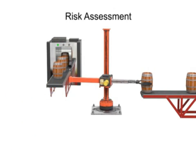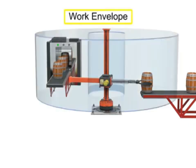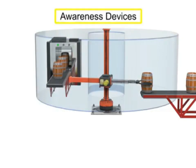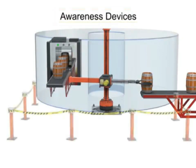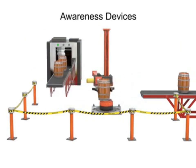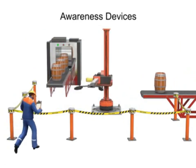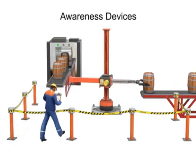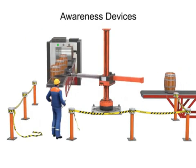Unauthorized access to the robot's work envelope can be hazardous to personnel. Several methods can be used to protect the work envelope. The simplest are known as awareness devices. These devices are only intended to define the work envelope and make personnel aware of the hazards. They do not prevent access and usually consist of small fences or roped-off areas.